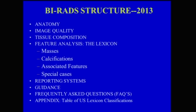The BI-RADS structure contains different chapters: anatomy, image quality, tissue composition, feature analysis, the lexicon which includes masses, calcifications, associated features, and special cases. It also includes a part on reporting systems, guidance, frequently asked questions, and an appendix.